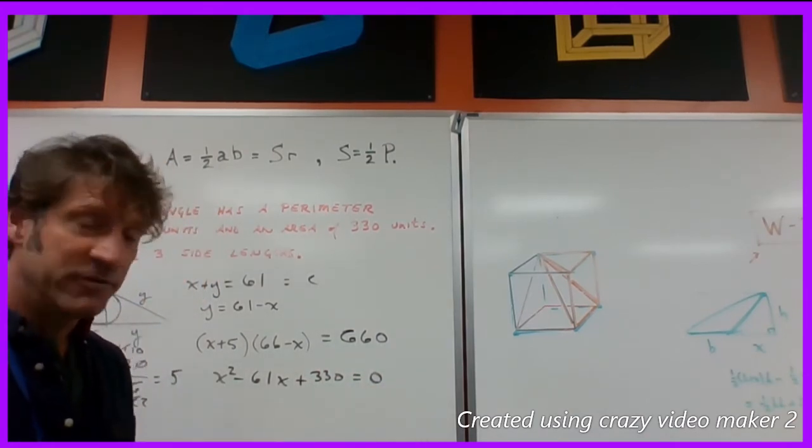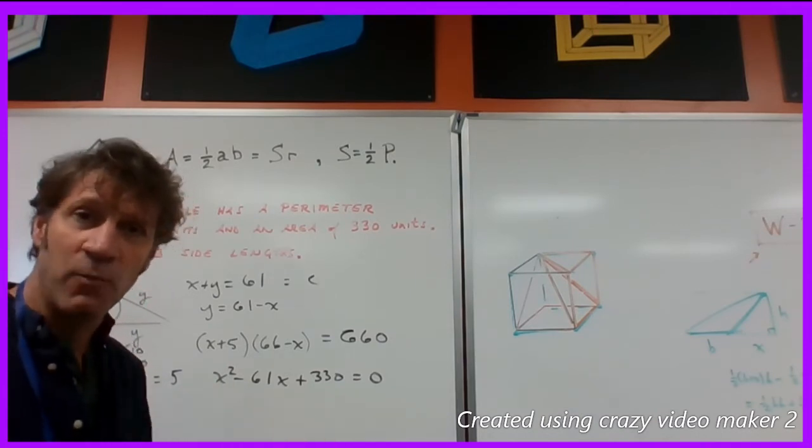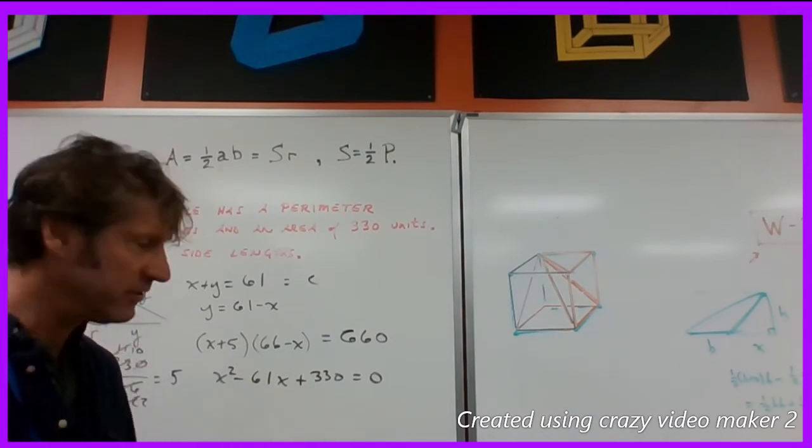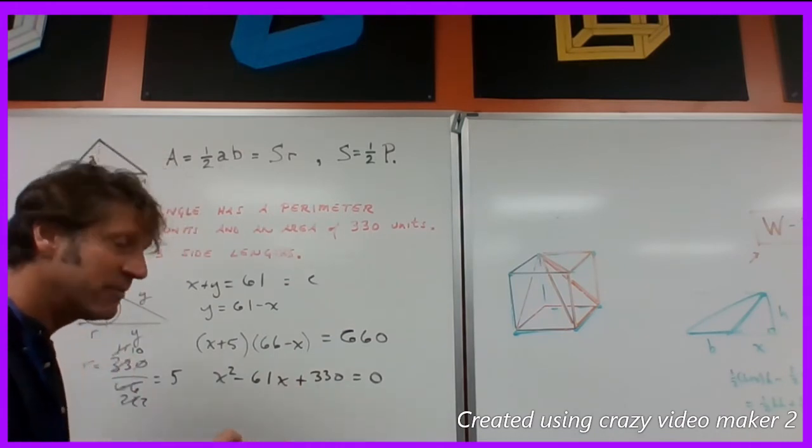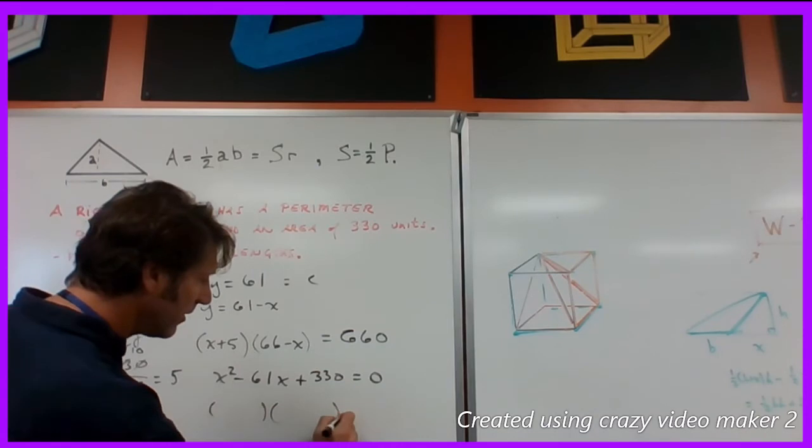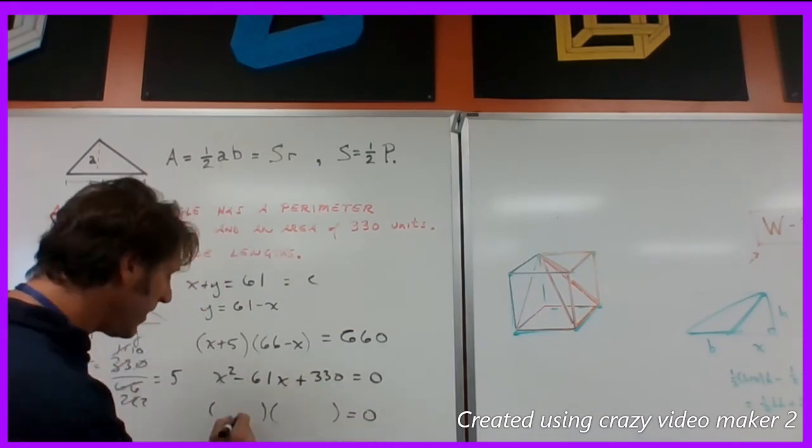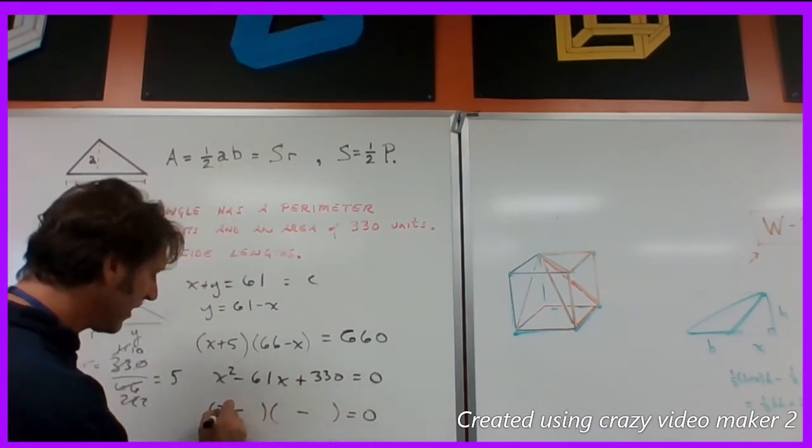x squared plus 61x plus 330 equals zero. Now this is a factorable type 1 quadratic. So there are factors of 330 that will add up to 61. And we're going to find them and we're going to find them this way. So we're going to do a little setup here. And we know that we have two subtraction problems happen here.